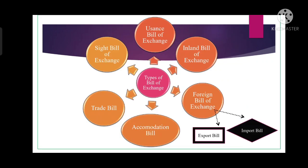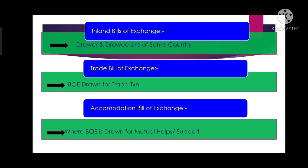What are the types of bill of exchange? Basically there are six types: the sight bill of exchange, the usance bill of exchange, the inland bill of exchange, the foreign bill of exchange, accommodation bills, and trade bills. The inland bill of exchange is that bill of exchange where the bill is drawn between two parties residing in the same country and also payable in that same country only — meaning the drawer and the drawee both reside in the same country.